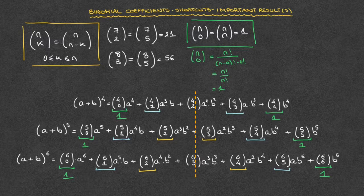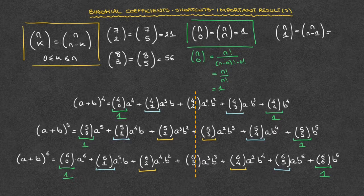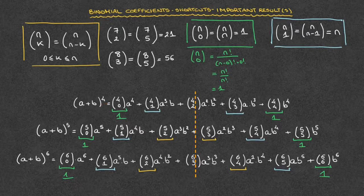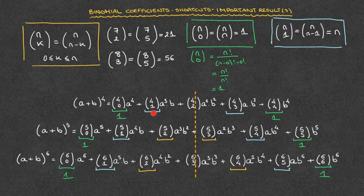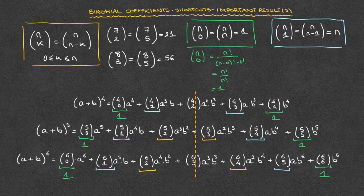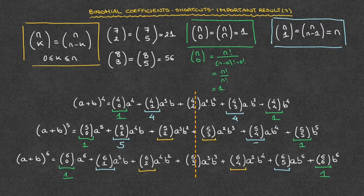The second special case worth knowing is that the binomial coefficient n choose 1, which equals n choose n minus 1, will always equal n — where n is the power to which we're raising the binomial. So for the first expansion n is 4, for the second it's 5, and for the last it's 6. The second coefficient from the left and the second from the right always both equal the power of the binomial. For the first expansion: 4 choose 1 equals 4, and 4 choose 3 equals 4. For the second: 5 choose 1 equals 5, and 5 choose 4 equals 5.